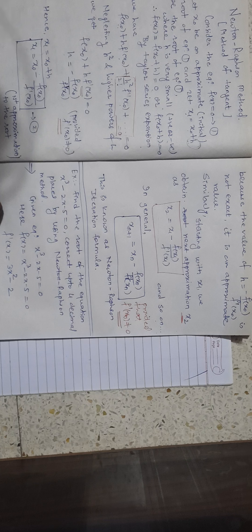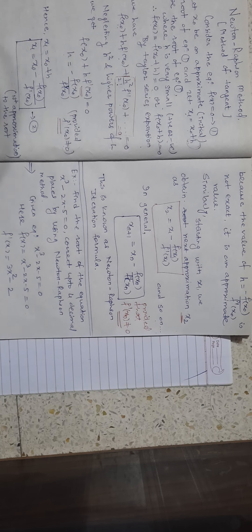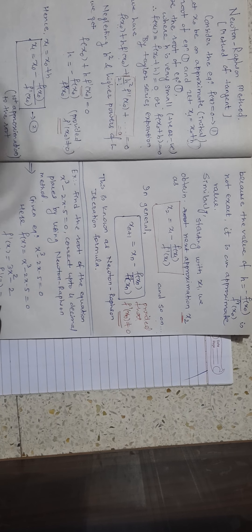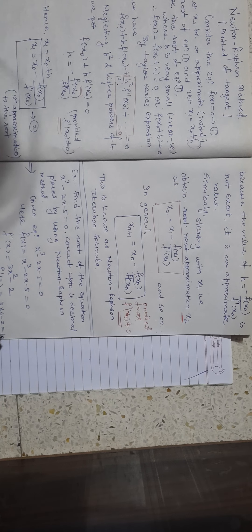Given: f(x) = x³ - 2x - 5 = 0. In the Newton-Raphson method we need the derivative of f(x). The derivative is f'(x) = 3x² - 2.